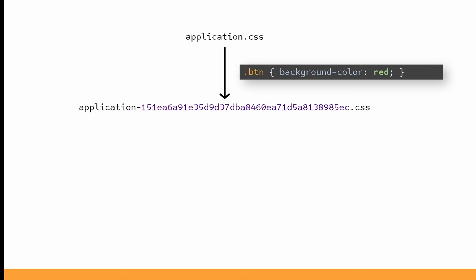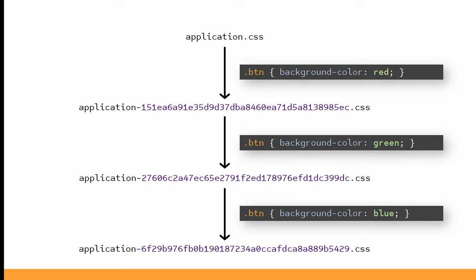And the best way to automate this is to ask your asset pipeline to generate a digest of the content and append it to the name, so that when the content changes, so does the digest, and so does the name.